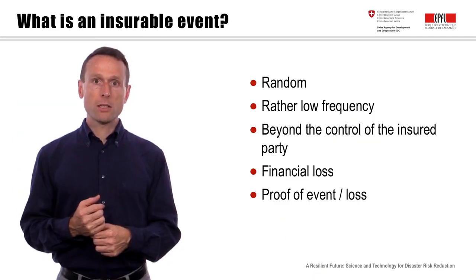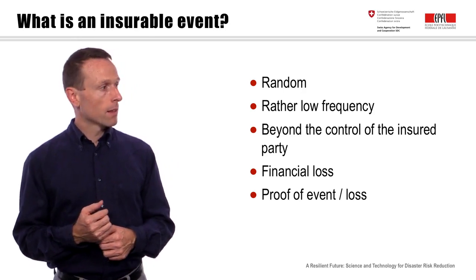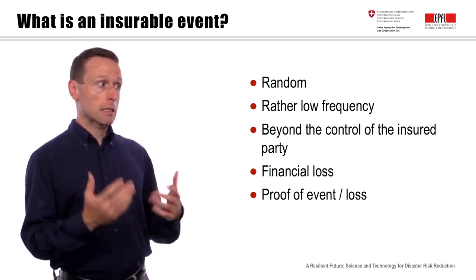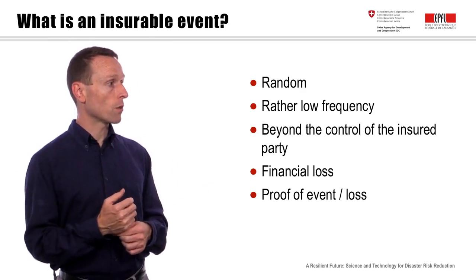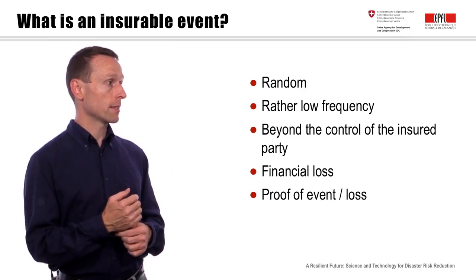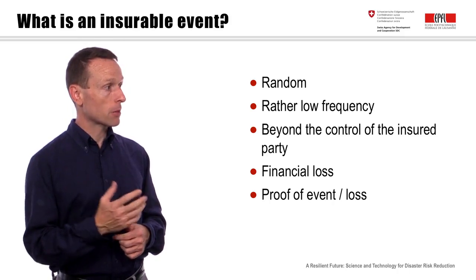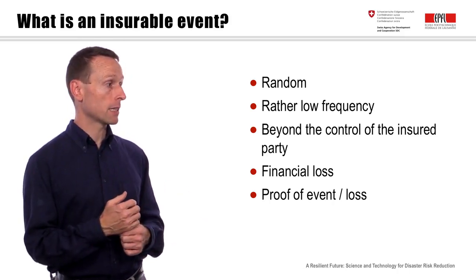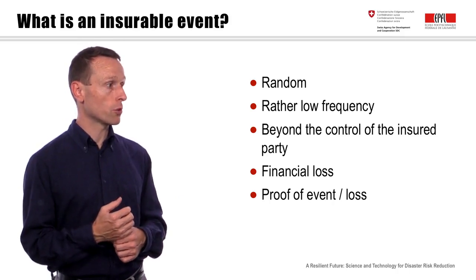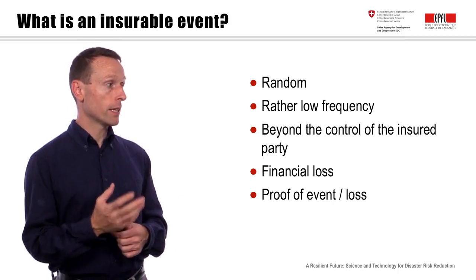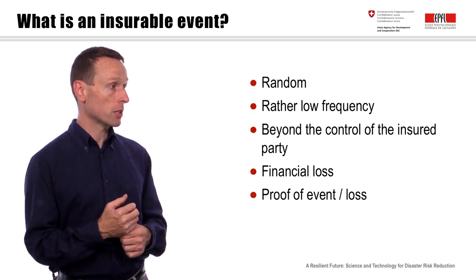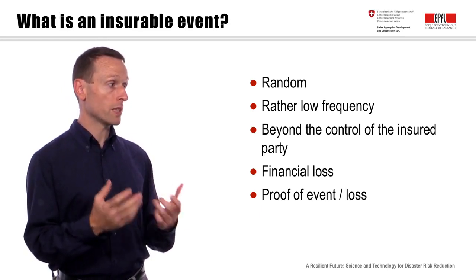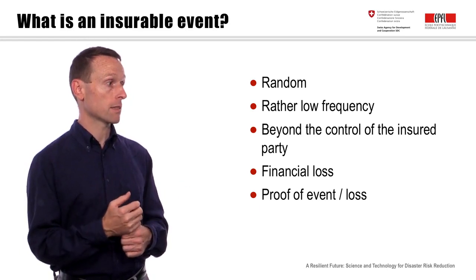So what is an insurable event? An insurable event has to be random — and still you need to have a good sense of how often it can occur. The frequency should be rather low, and the event definitely has to be beyond the control of the insured party. The event should also cause a financial loss, and you need to be able to prove that the event and the loss really happened.